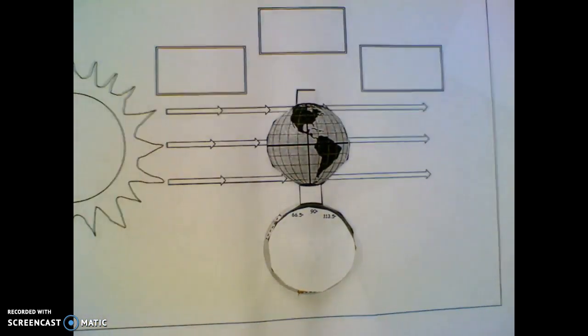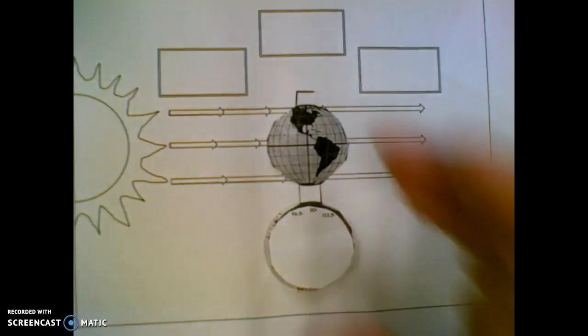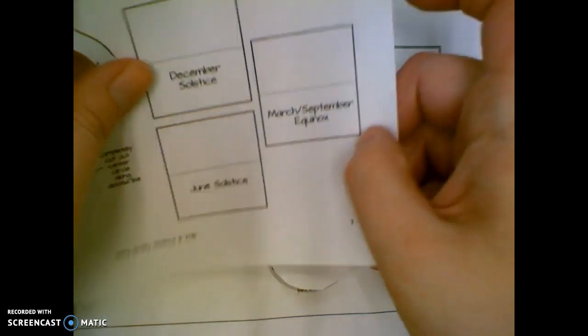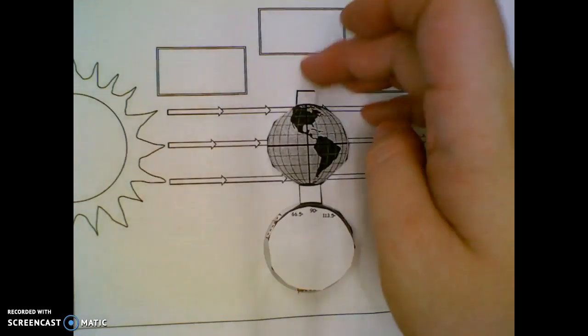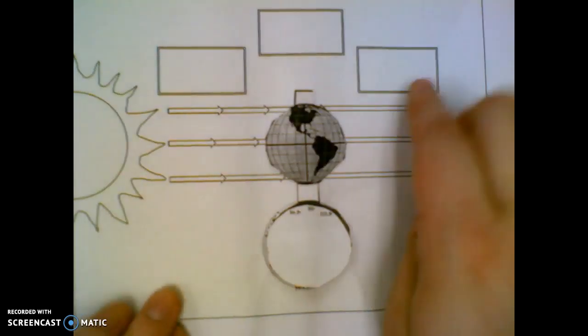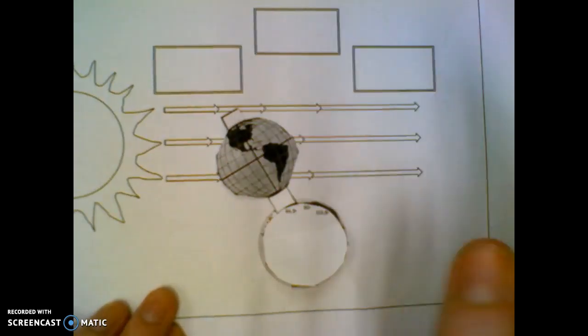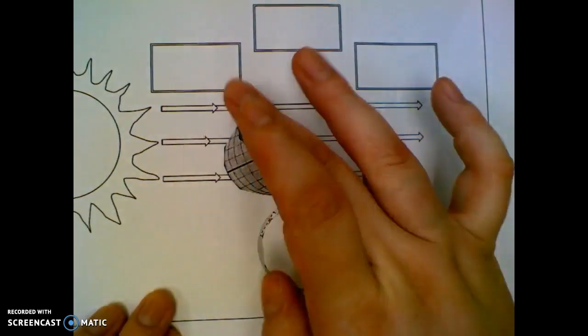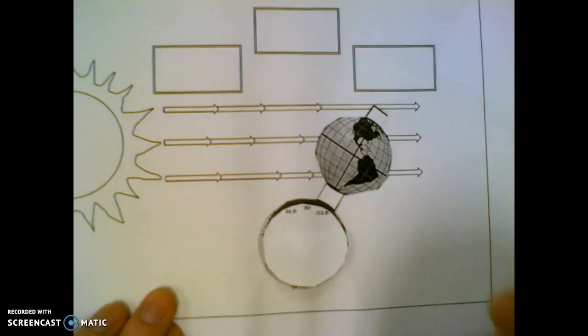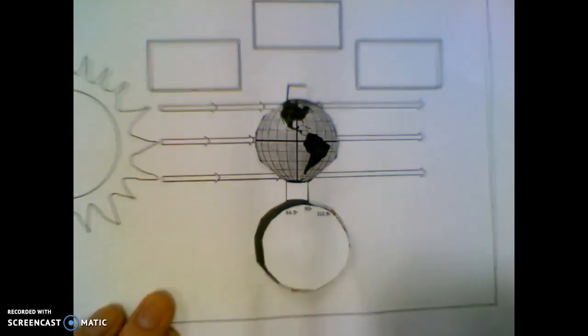And then the last thing that you'll need to do is cut out where it says the solstices and the equinox, and you need to glue those to the correct spots on here. So this one, you know, the earth is tilted all the way toward the sun. This one's where it's tilted all the way away, and then this one's right in the middle.